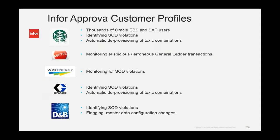Segregation of duties is probably one of the main uses of Approva. A number of customers have taken it a step further — for example, Mattel is monitoring suspicious and erroneous general ledger transactions. Putting a platform like this in place takes the risk out of back-office applications and some of the things that can go wrong within them.